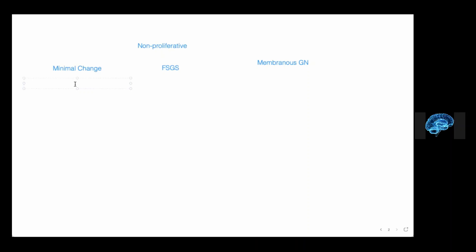Let's talk about minimal change disease. Epidemiology is very important — it's the most common cause in pediatric populations, accounting for approximately 80% of nephrotic syndrome in childhood. If a patient comes in with proteinuria, puffy eyes, puffy tummy, and sacral edema and you're suspecting minimal change disease, you would start with urinalysis.